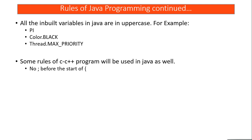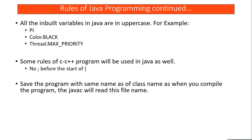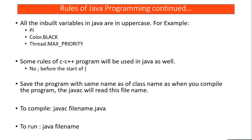Additional rules you must know from C and C++ that also apply in Java: there is no semicolon before the start of curly braces. You must save your program with the same name as the class name. When you compile using javac, you write: javac followed by the filename dot java. To run the program you write: java followed by the filename.